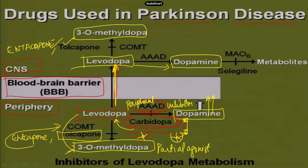Once dopamine is formed in the CNS, you don't want it metabolized to its metabolites. So you give a selective MAO-B inhibitor — selegiline — as the third drug in this cocktail. Selegiline prevents the breakdown of dopamine to inactive metabolites. Combining all these drugs ensures that levodopa in the periphery crosses into the CNS, AAAD makes it into dopamine, and you have maximized the efficacy of your treatment.